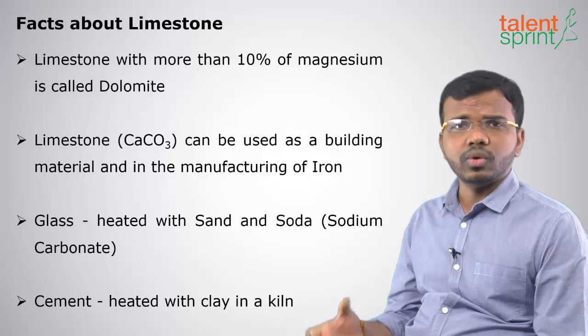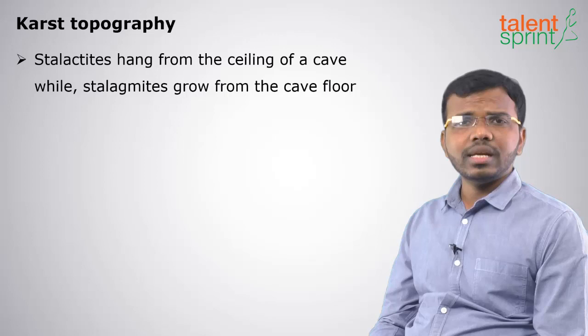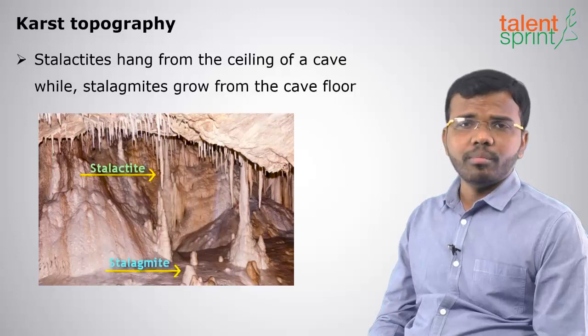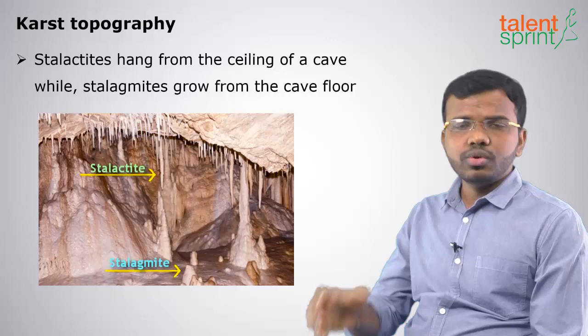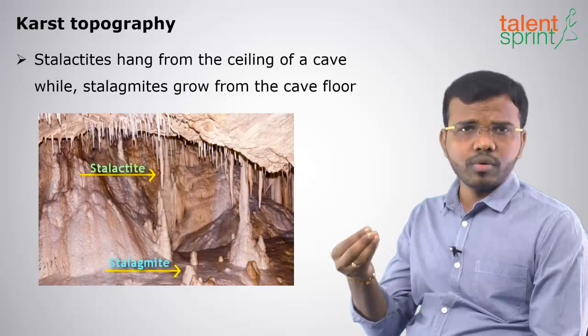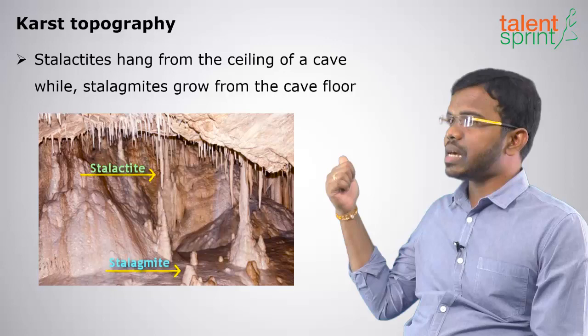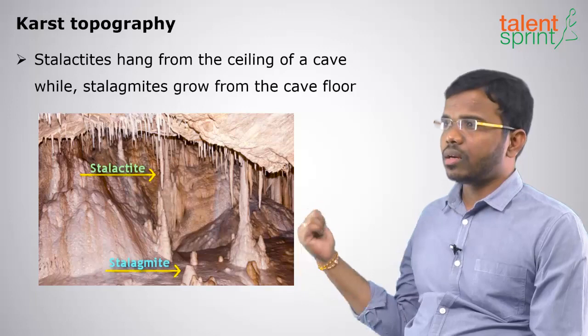A very important topography of limestone is karst topography, which is repeatedly asked in general studies examinations. Karst topography forms because calcium carbonate in limestone reacts with water. This type of topography can be found near the seashore, where water continuously pushes the limestone rock, forming a distinct topography called karst topography. The upper formations are called stalactites and the lower ones are called stalagmites.